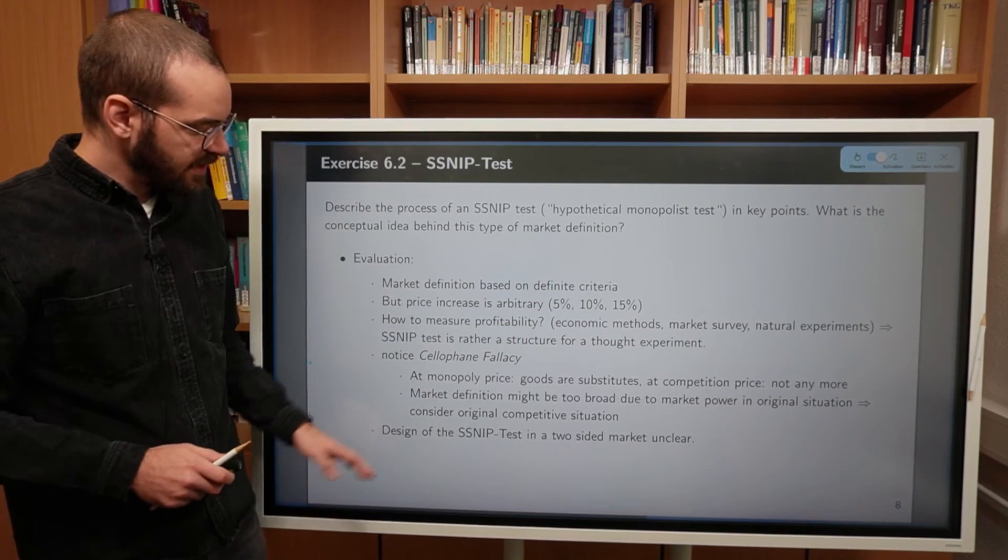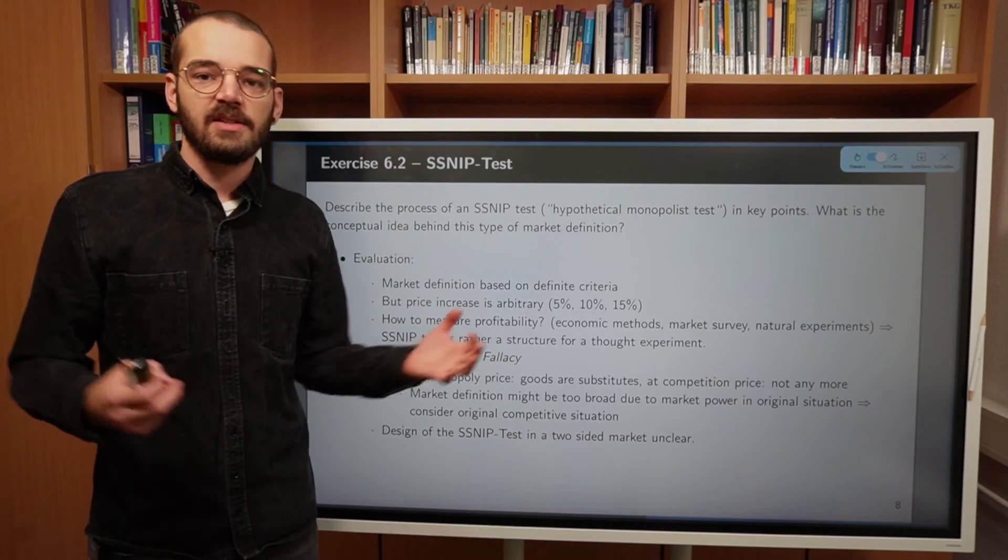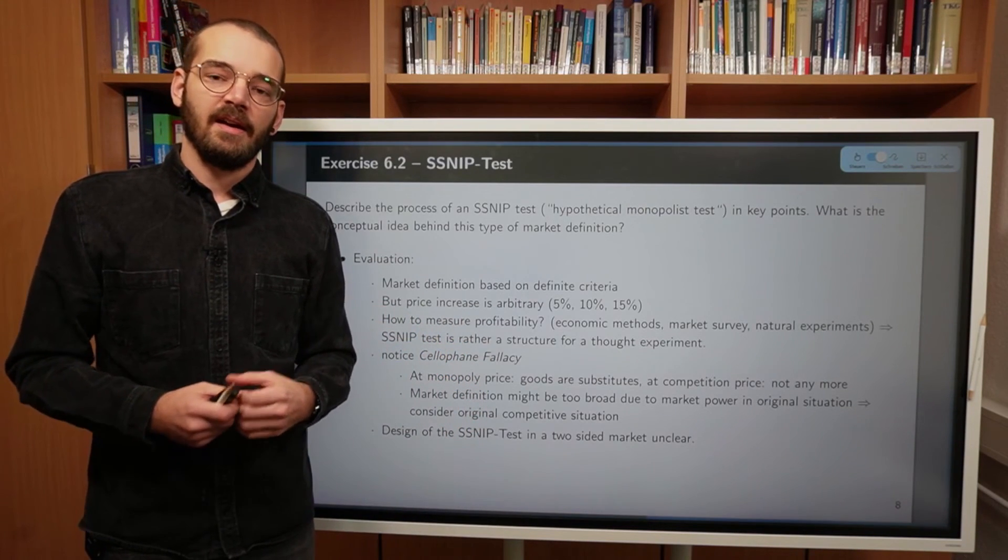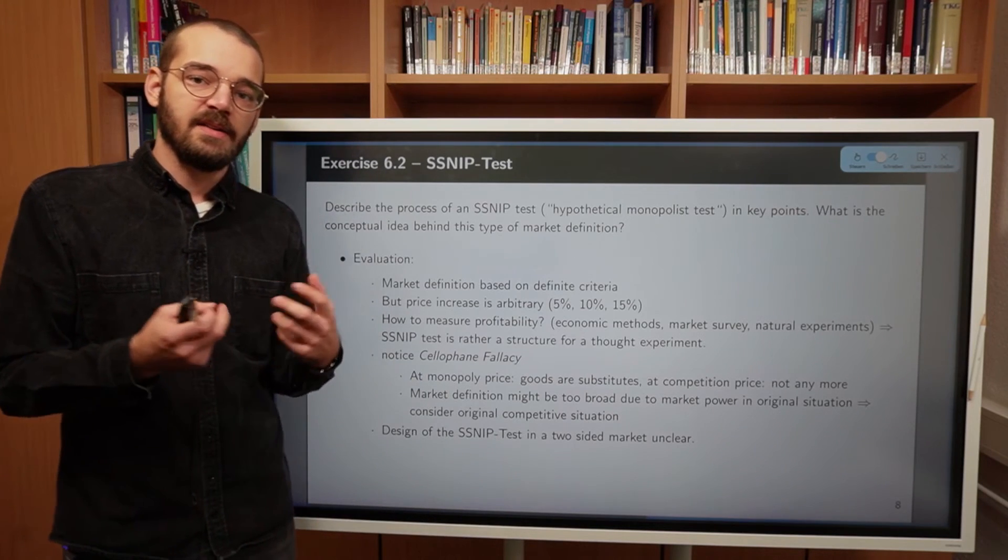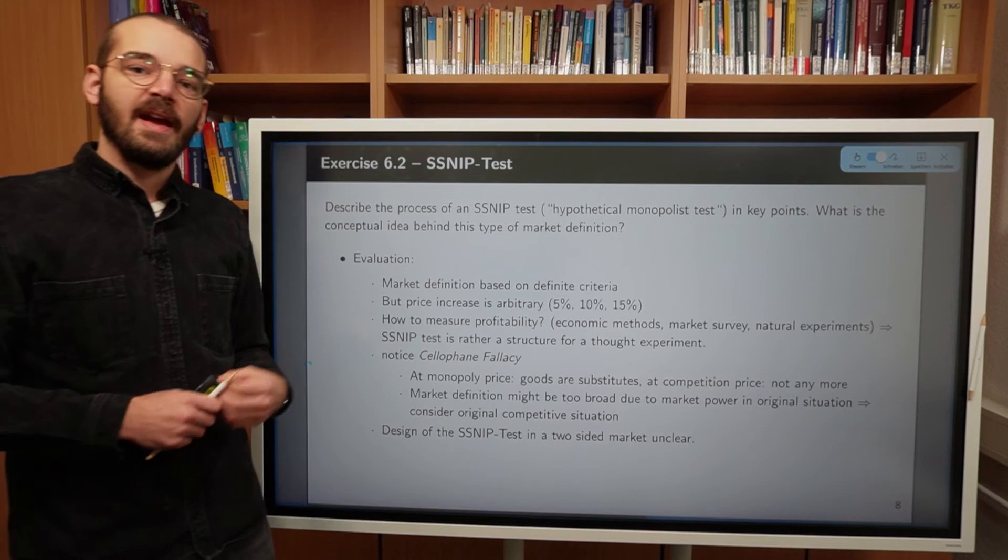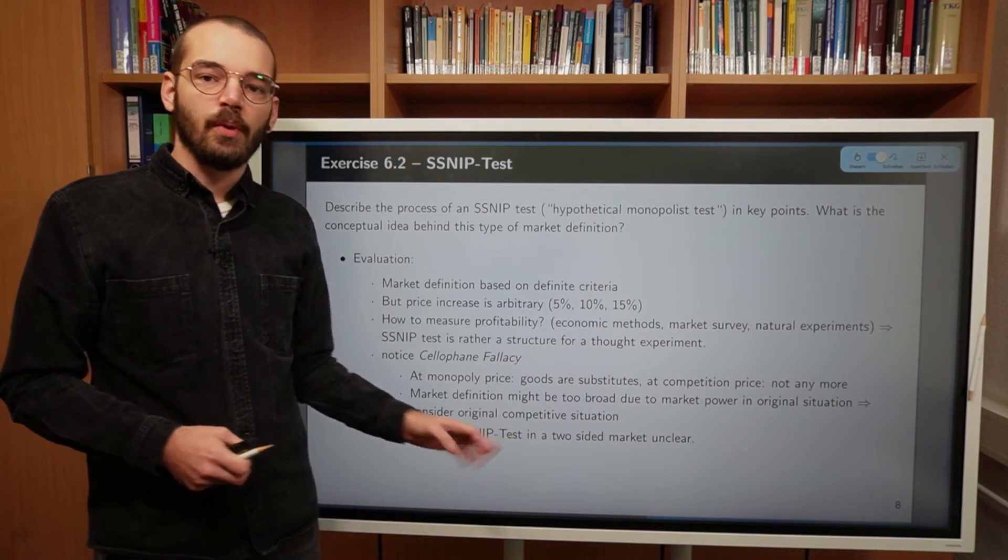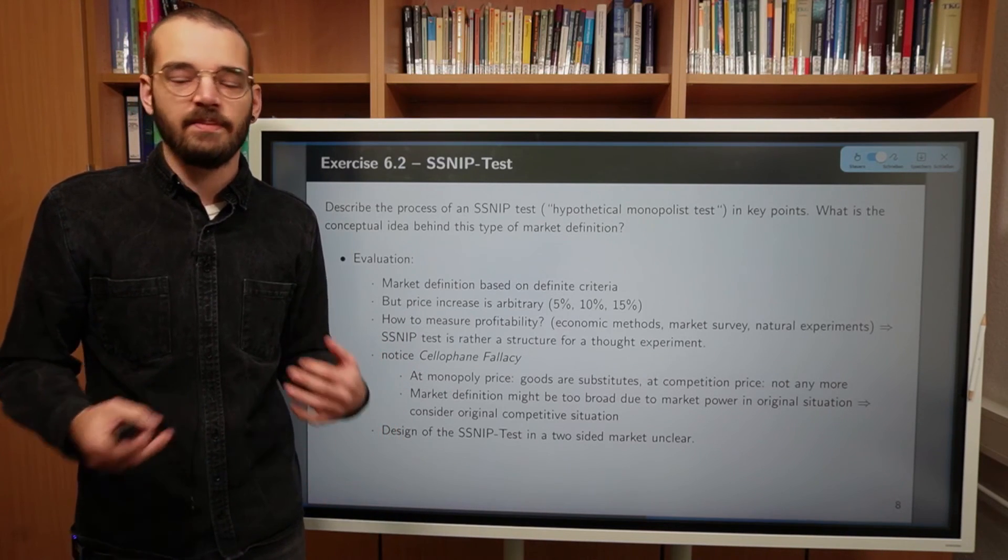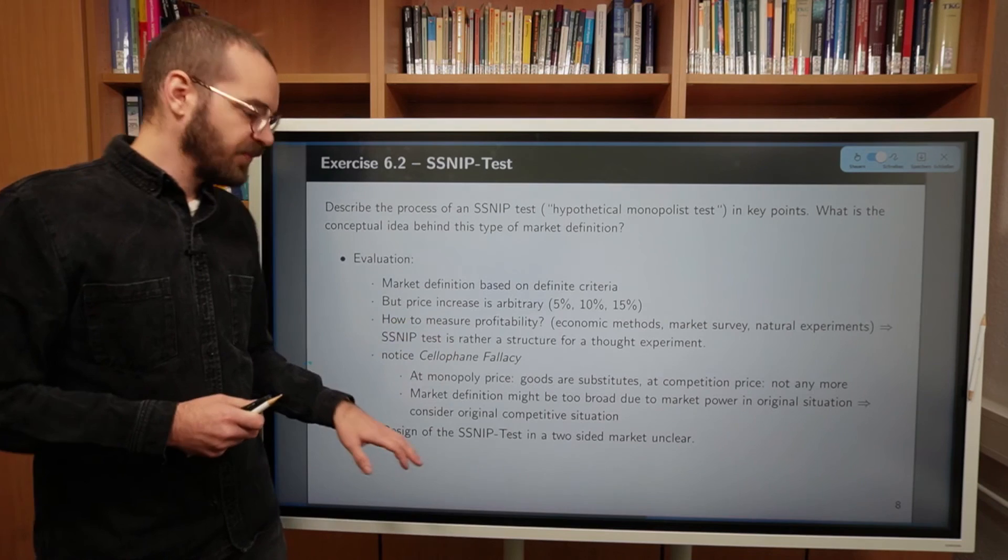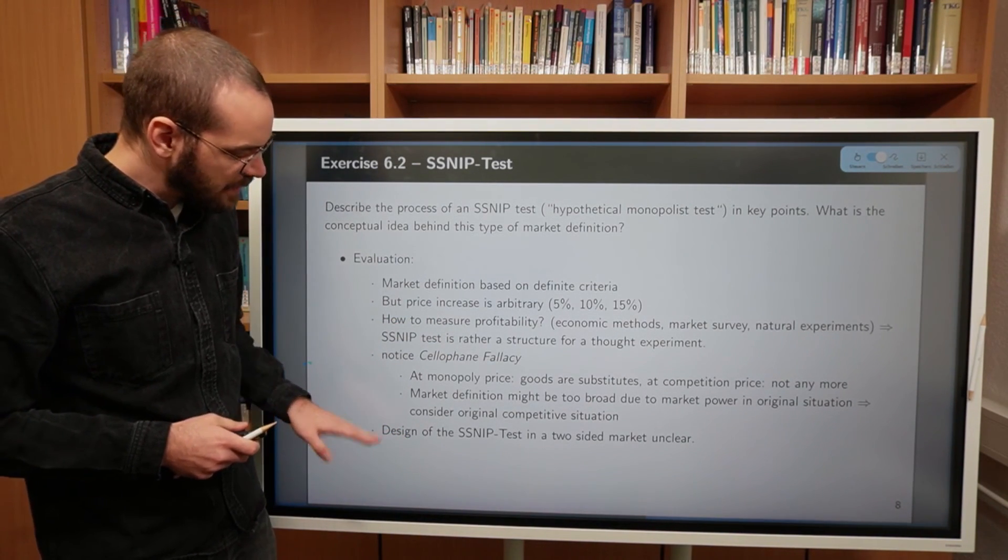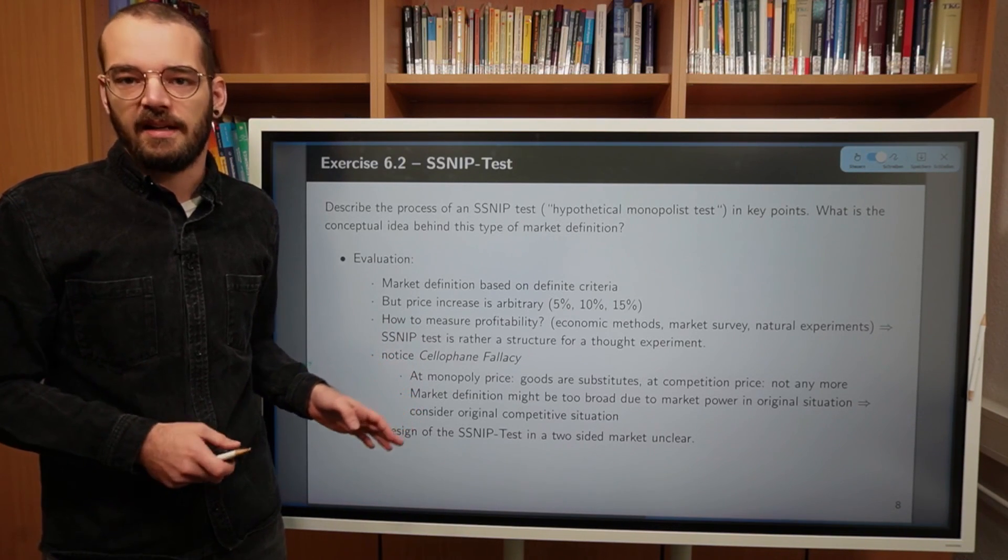And then one final point is, we are going to talk about two-sided markets down the road during this semester, but basically consider a platform. Any platform, there's buyers, there's sellers, and then there's the platform operators. And both of these sides of the market, suppliers and sellers, meet on this platform. And now we have a two-sided market, a so-called two-sided market. And in these kind of markets, it's really unclear how to employ a SSNIP test towards, for example, the supplier side on a two-sided market, simply because there's other effects going on, which we are going to talk about in the future of this course. Just to mention it, at this point, the SSNIP test, or it's rather unclear how we can use the SSNIP test, even conceptually, on two-sided or more-sided markets in general.